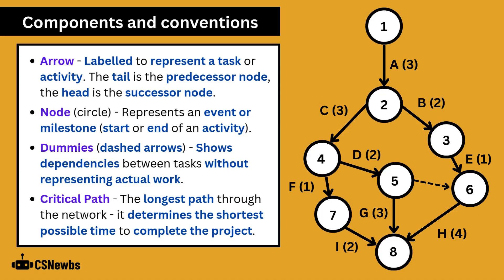In this example activity A, which might be to gather requirements, starts at node 1, which may represent the beginning of the project. The three denotes three days will be allotted to the task and upon completion of activity A, the head of the arrow represents the project will now be at node 2, which could be a milestone titled requirements gathered.